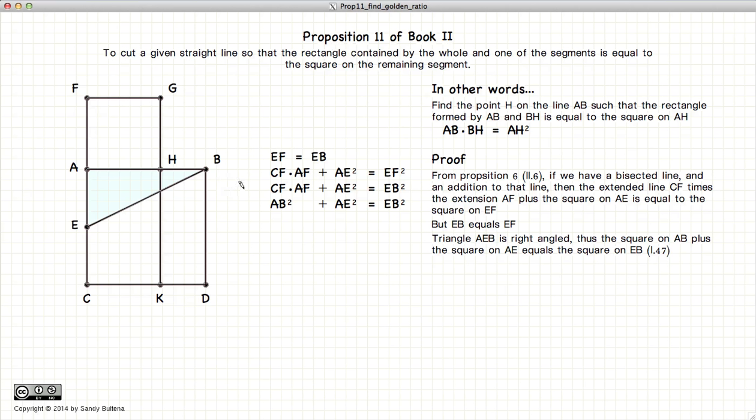Let's look at these two equalities. They're both equal to EB squared, so hence they are equal to each other. If we subtract AE squared off of both sides, we end up with these two being equal to each other.